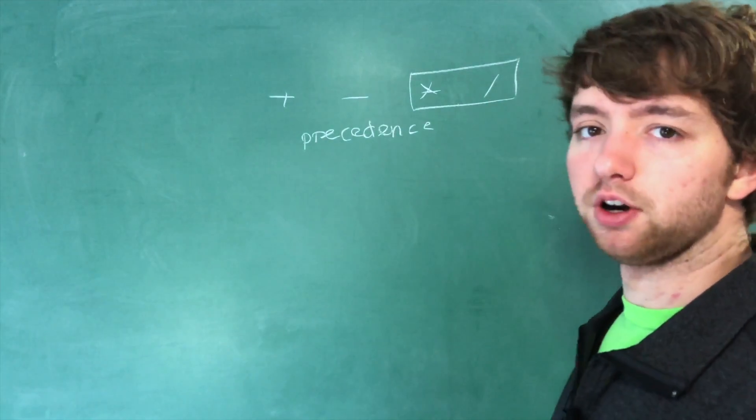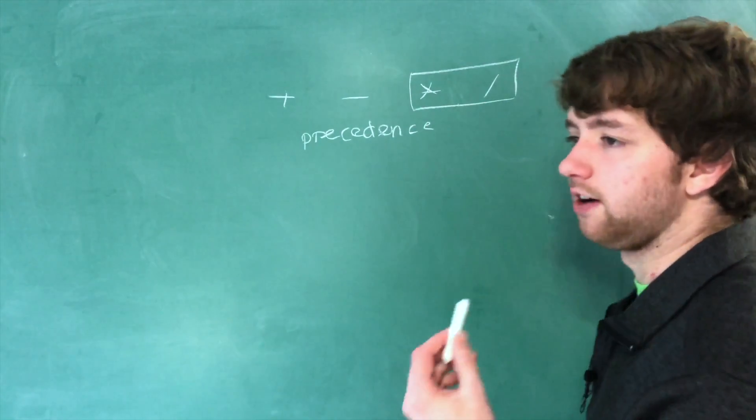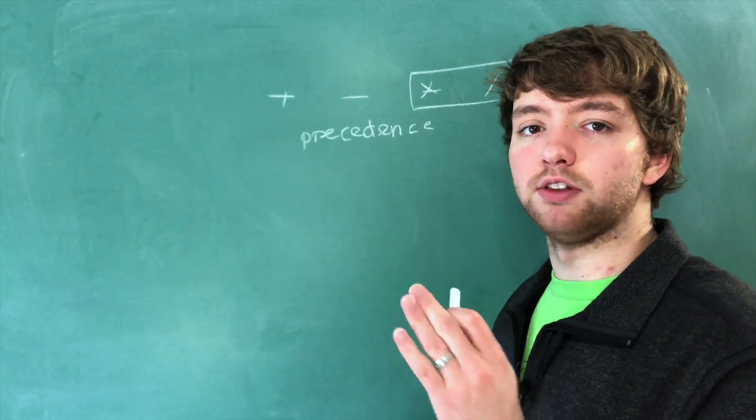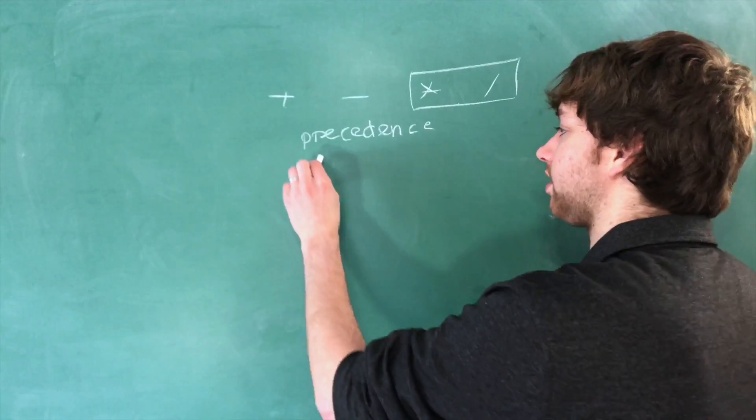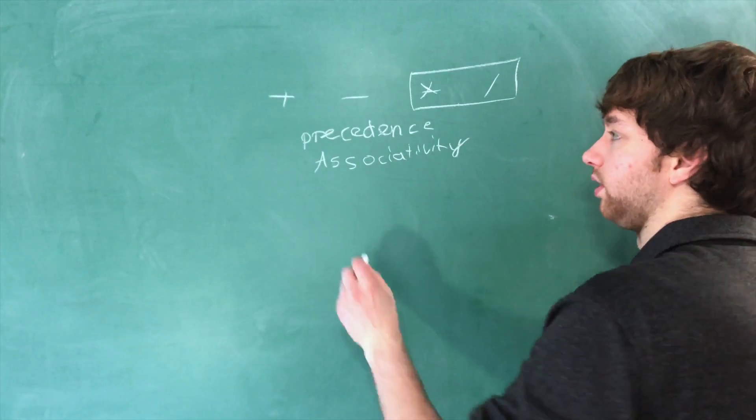Okay, next question is: what is the word used to describe if you have two operators of the same precedence which way they are evaluated? Either left to right or right to left? The answer is associativity, which makes a lot more sense when you just go through an example.